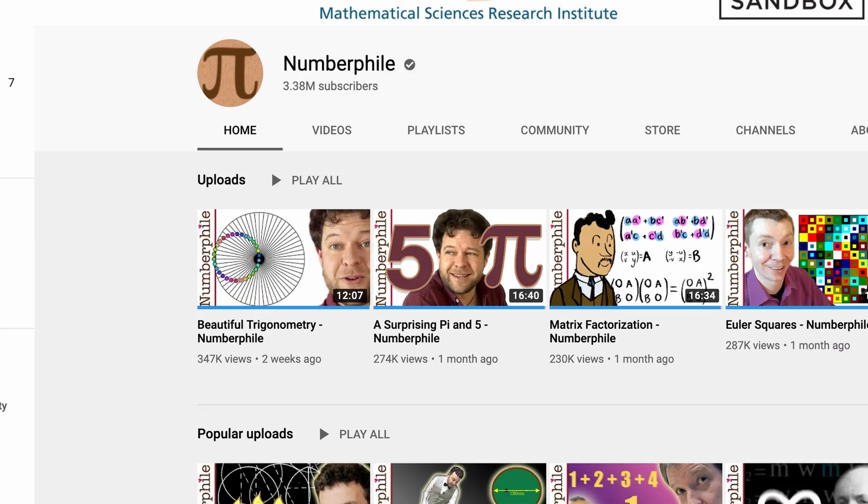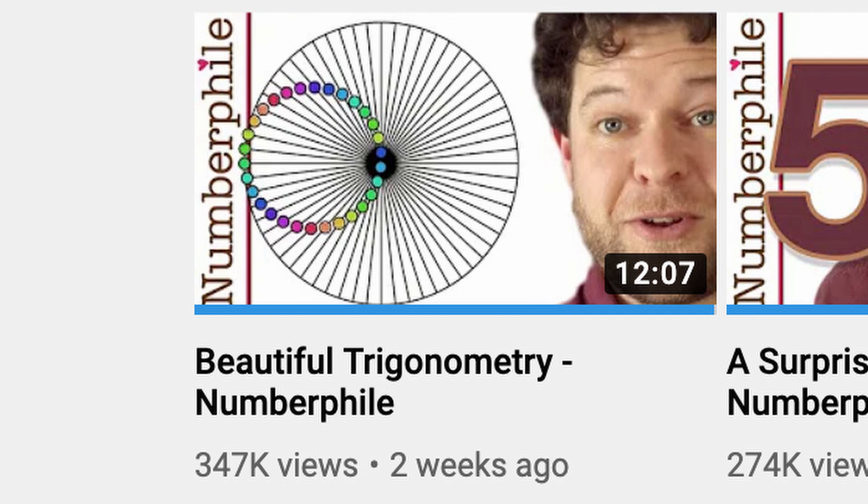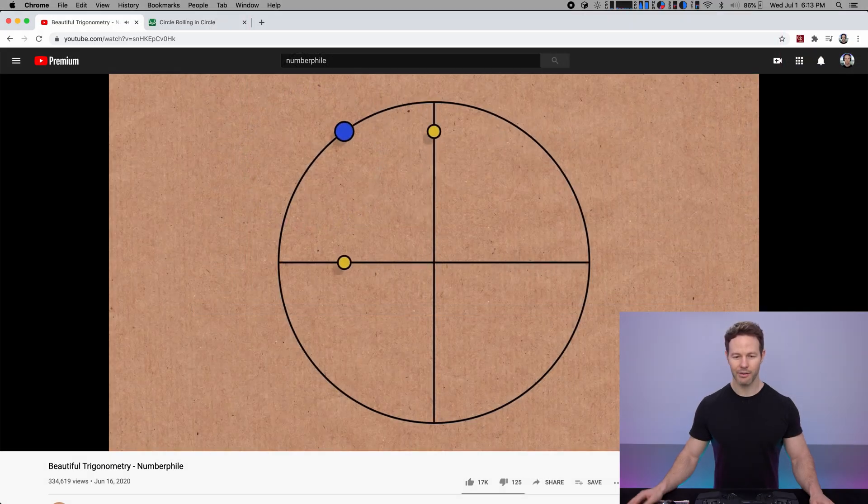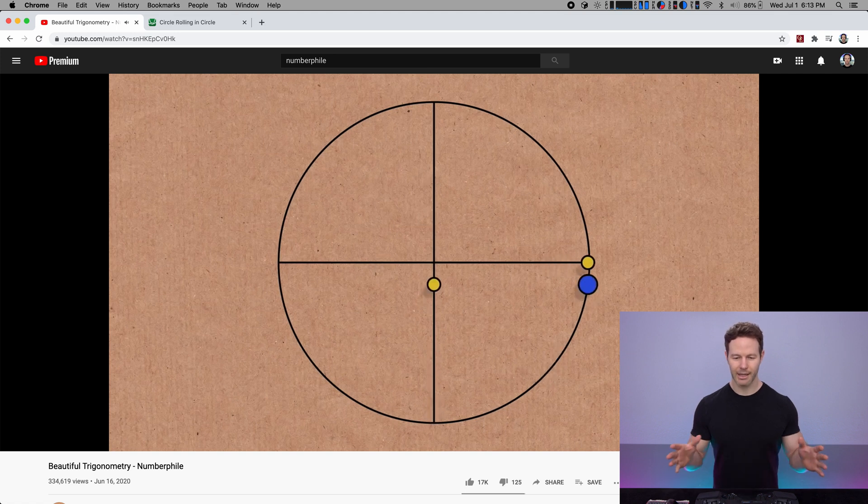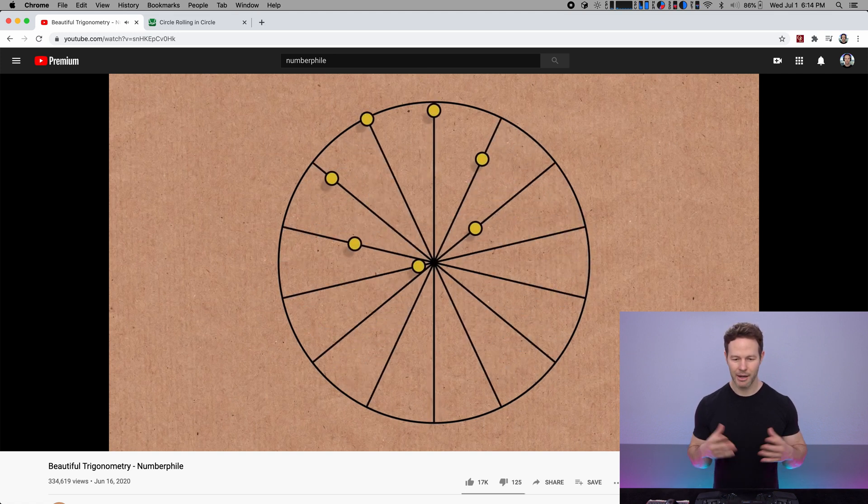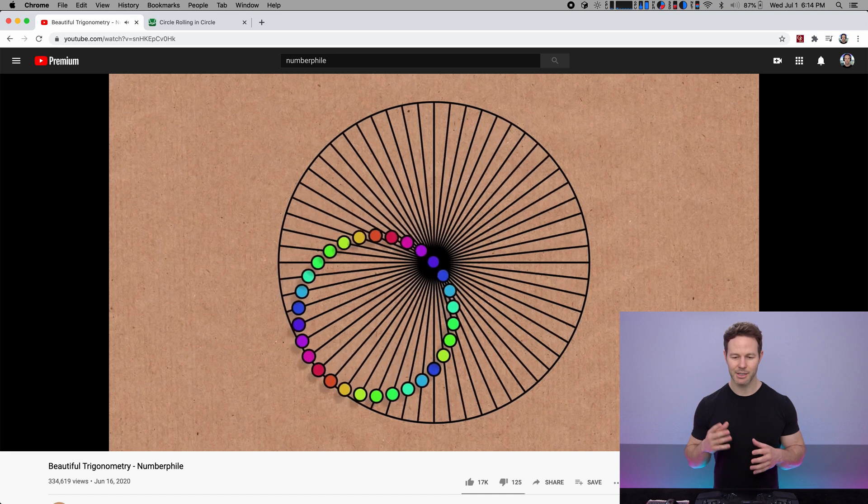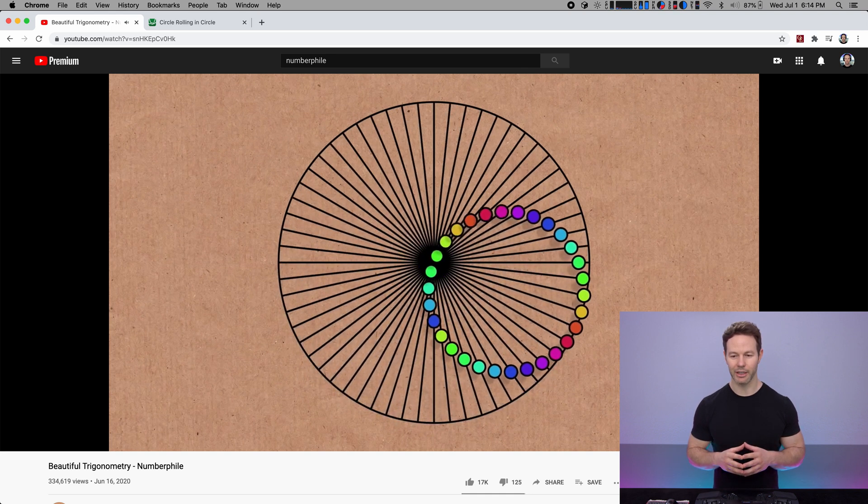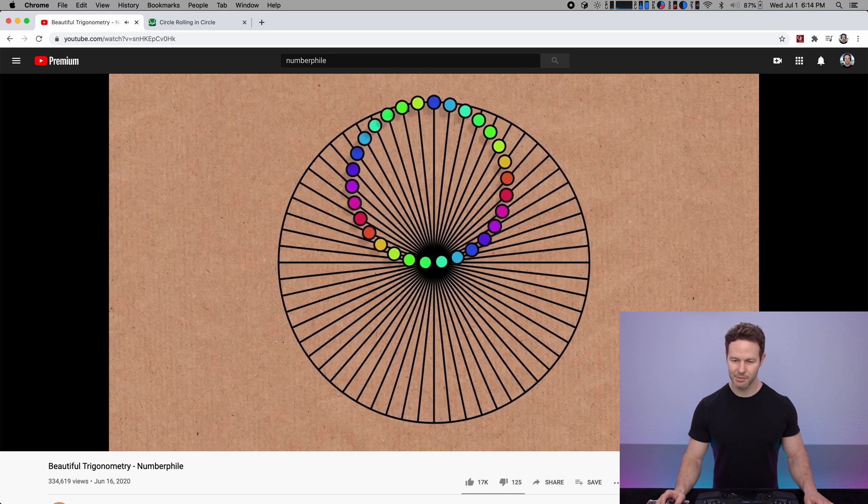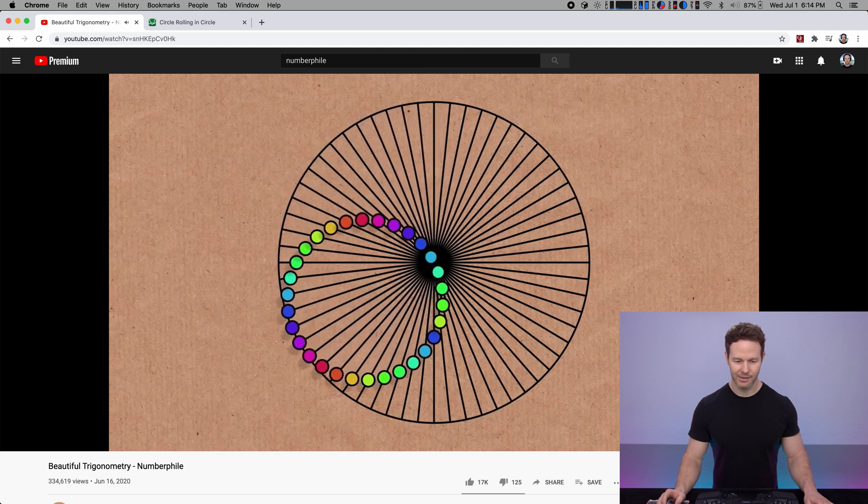What is up guys, Elliot Way here. Numberphile recently released a video called Beautiful Trigonometry where they showed that if you have dots moving back and forth in this oscillatory pattern, as you add more and more dots, a pattern starts to emerge that looks like a spinning wheel inside a bigger wheel, and all these dots are still just moving along a straight line.